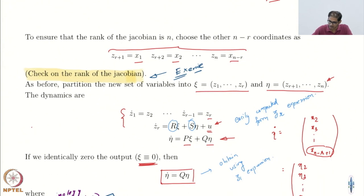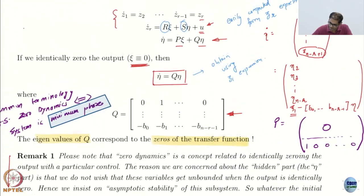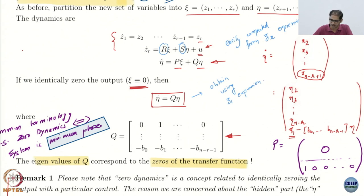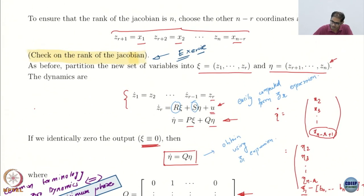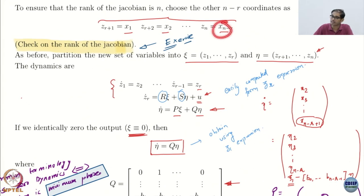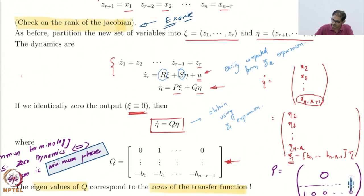What is the derivative of the etas? X1 dot is X2, X2 dot is X3, X_{n minus r} dot is X_{n minus r plus 1}. So if you want to write them in terms of eta and psi: X1 dot is X2, that is eta 2; X2 dot is X3, that is eta 3. You go all the way to eta_{n minus r}. Then X_{n minus r plus 1} is not any eta — eta goes only to X_{n minus r}.